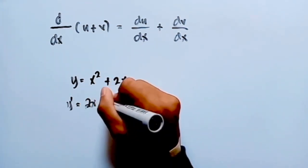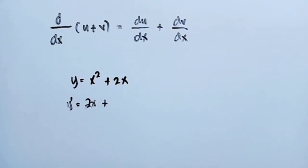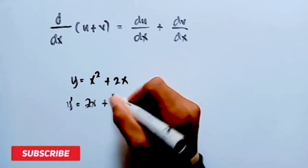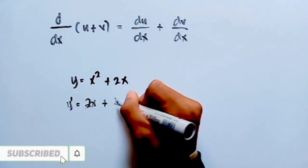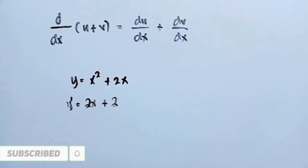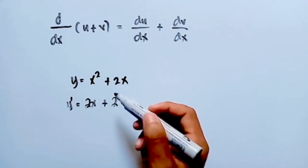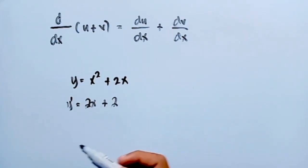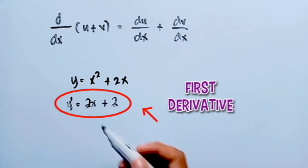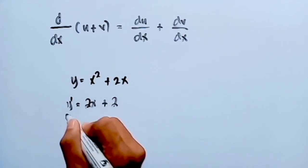Then plus — what is the derivative of 2x? The derivative of 2x, again using the power formula, is equal to 2. Hence, the first derivative of the function y equal to x squared plus 2x is 2x plus 2.